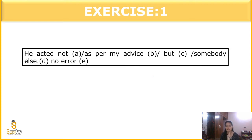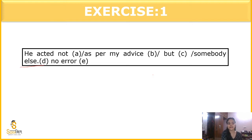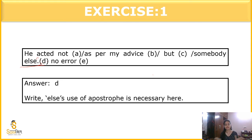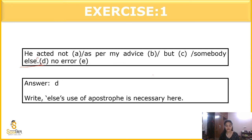Question 1: 'He acted not as per my advice, but somebody else.' No error. The error is in part D because apostrophe has not been used here. Apostrophe is used when we have to show ownership of someone. For example, 'honey's pen' shows my ownership over this pen — that is what apostrophe implies.